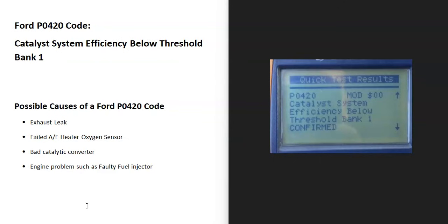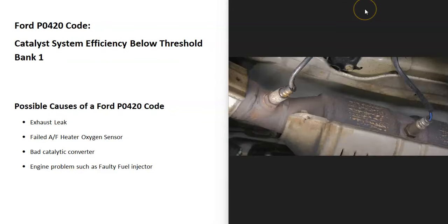What does this mean? Well, there are sensors located on the exhaust and they do two things. The first thing they do is monitor how much oxygen was burnt off during combustion, and then the onboard computer uses this information to adjust the air-fuel ratio mixture going into the cylinders.